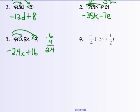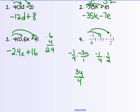Practice number 4: negative 1 fourth times negative 3y — two negatives — gives 3y over 4, which I can also write as 3 fourths y, and it is positive. And negative 1 fourth times 1 half gives negative 1 eighth. So the answer is 3 fourths y minus 1 eighth. I always draw the two arrows so I remember to distribute to both terms.